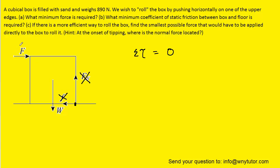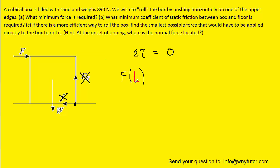We can turn to the applied force F and determine its torque. When calculating torque, we multiply the force times some distance, and that distance needs to be the perpendicular distance between the force and the pivot. So if we take this force and imagine extending it horizontally, then draw a perpendicular from the pivot to that extended force line, we can see that perpendicular distance is simply the length L of the side of the box.